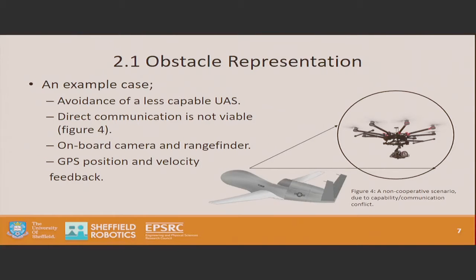As an example to give context for the future slides: we have a much more capable aircraft, a Global Hawk, flying in an airspace with a much less capable system — in this case, a commercial drone. We can assume the communication systems on board the Global Hawk are much more sophisticated than those of a commercially available drone. So while no communication is available between the two systems, we must still act to avoid the less capable system regardless. The same example could be extended to systems that are unwilling or unable to communicate — maybe it's a weather balloon, for example.